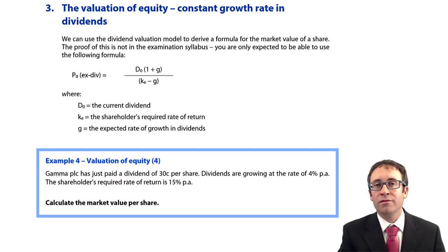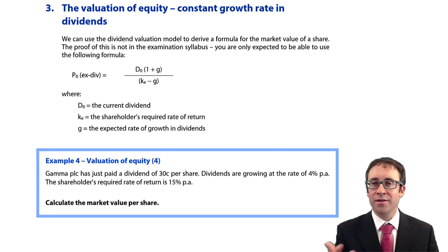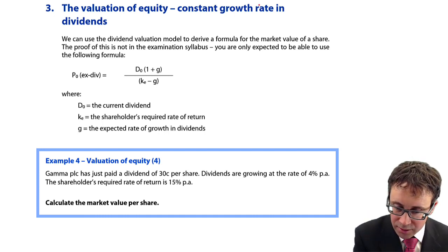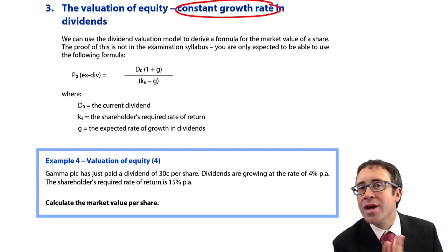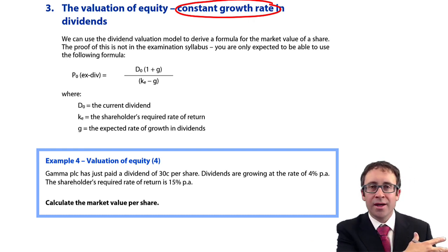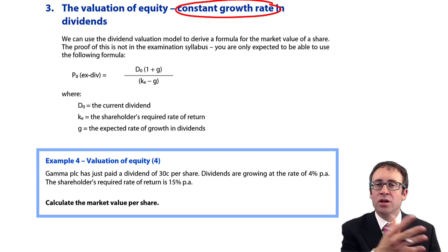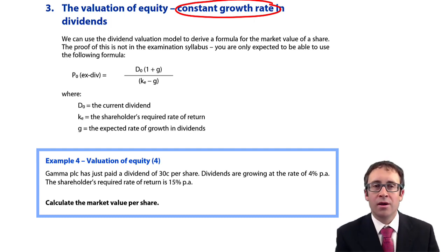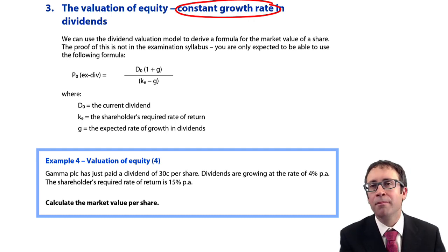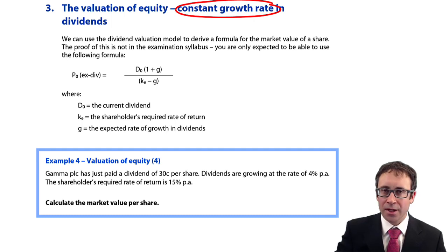Having gone through and looked at valuing equity both ex-div and cum-div, whereby there was no growth in dividends in the last chapter, we are now going to look at the case whereby we have growth in those dividends, and that growth is a constant growth rate. In reality, dividends will grow at different percentages each year — we take an average growth and assume that is the constant growth over the period into the future. It's much simpler than having different rates of growth every single year.